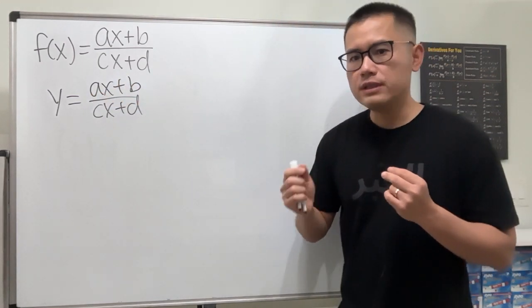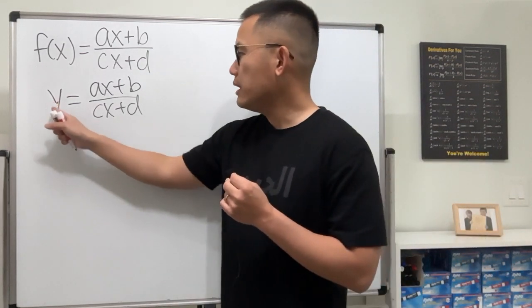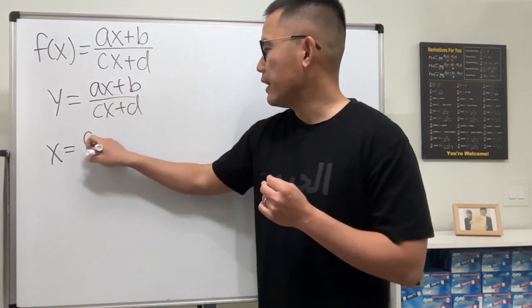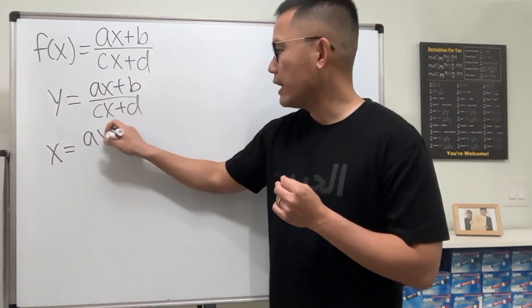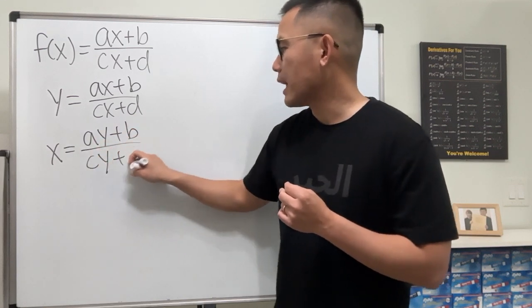Then, for the inverse, the main thing is the x and y got switched. So we are going to write the y as x, and then we will have ay plus b over cy plus d.